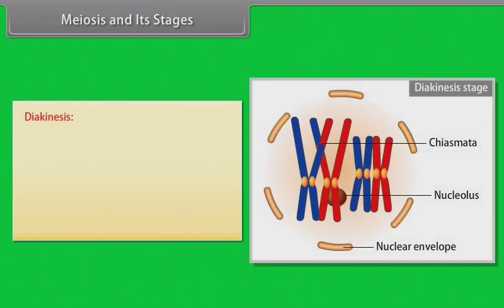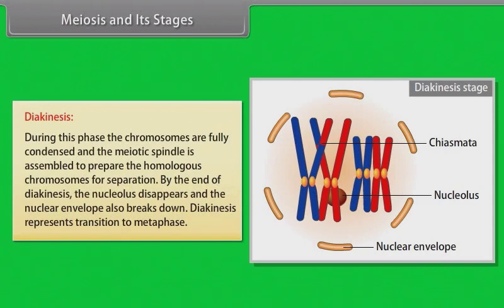The final stage of meiotic prophase I is diakinesis. This is marked by terminalization of chiasmata. During this phase, the chromosomes are fully condensed and the meiotic spindle is assembled to prepare the homologous chromosomes for separation. By the end of diakinesis, the nucleolus disappears and the nuclear envelope also breaks down. Diakinesis represents transition to metaphase.